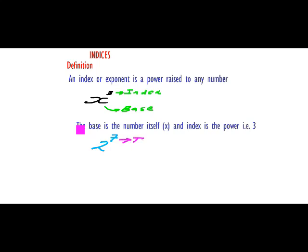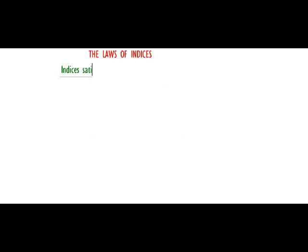If you have 2 raised to power 7, then 7 is the index and 2 is the base. So the power of any number is the index, and the number itself is the base.